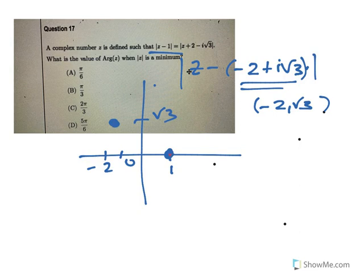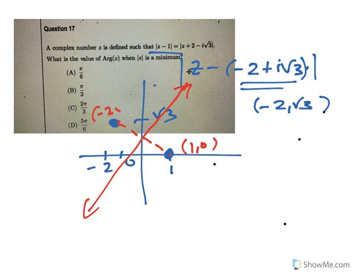So it's equal distance from both these fixed points. That's actually the perpendicular bisector. That point is 1,0, and this point is minus 2, root 3. So what are we actually after here?